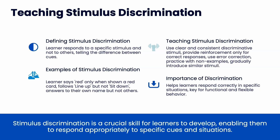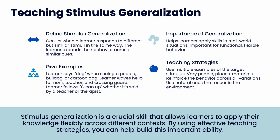When a learner says red when shown a red card and follows line up but doesn't line up when they hear sit down, it helps the learner respond to specific situations — key for functional and flexible behavior. Stimulus generalization occurs when a learner responds to different but similar stimuli in the same way — the response stays the same, and the learner expands their behavior across similar cues. The learner says dog when they see a poodle, bulldog, or cartoon dog; waves hello to mom, teacher, or crossing guard. To teach generalization, we use multiple examples of target stimuli, vary things, continue to reinforce the behavior across variations, and use natural cues that occur in the environment.